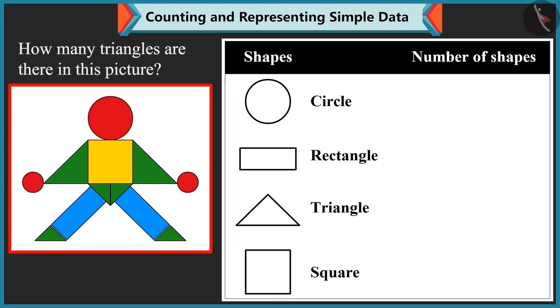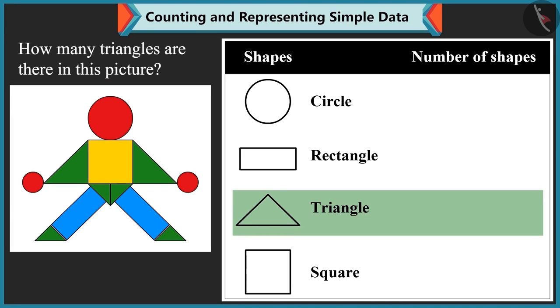Now, tell me how many triangles are there in this picture? There are 1, 2, 3, 4, 5 and 6. There are 6 triangles.